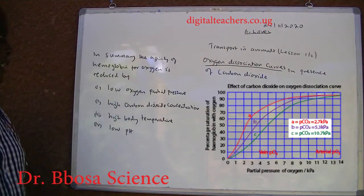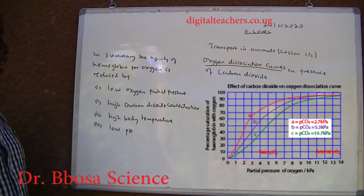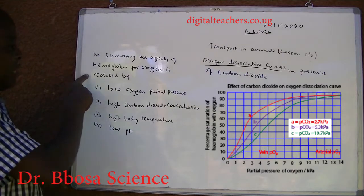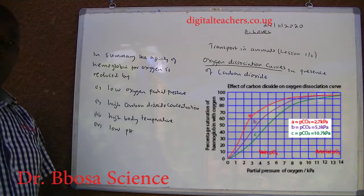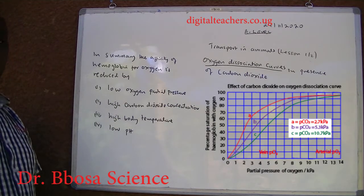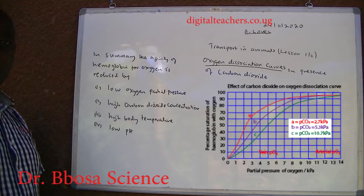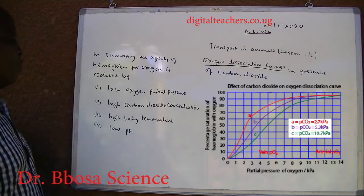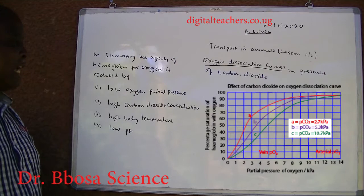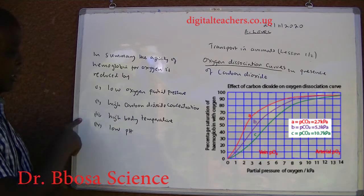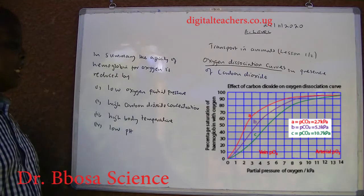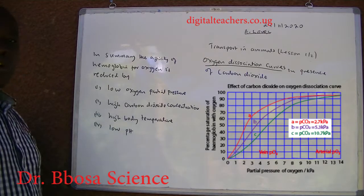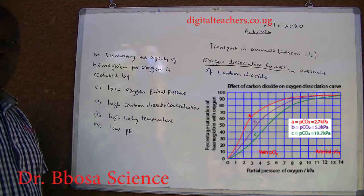In summary, the affinity of hemoglobin for oxygen is reduced by: 1. low oxygen partial pressure or concentration. 2. high carbon dioxide concentration. 3. high body temperature. 4. low pH.